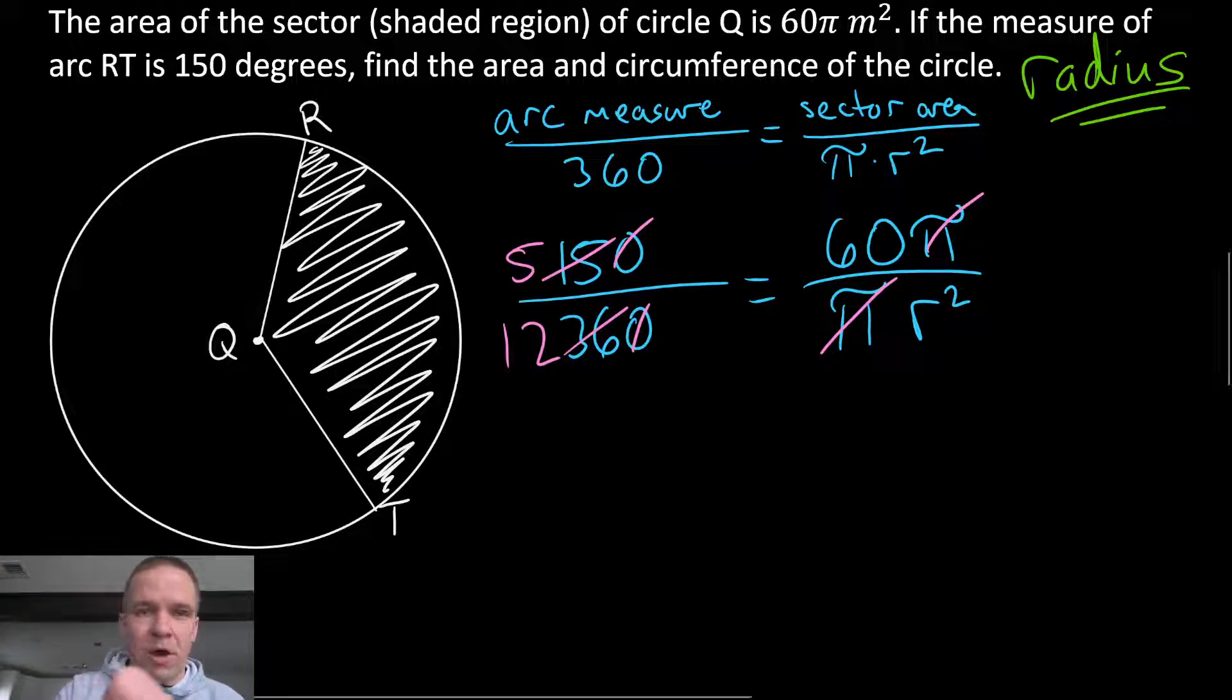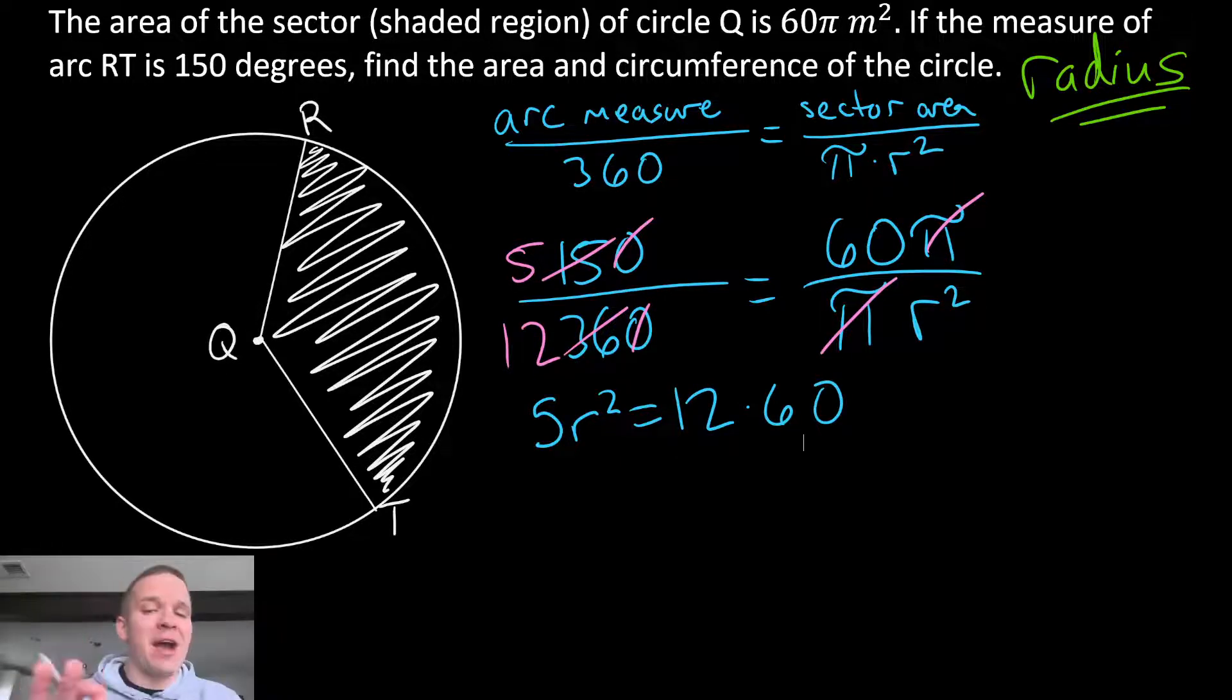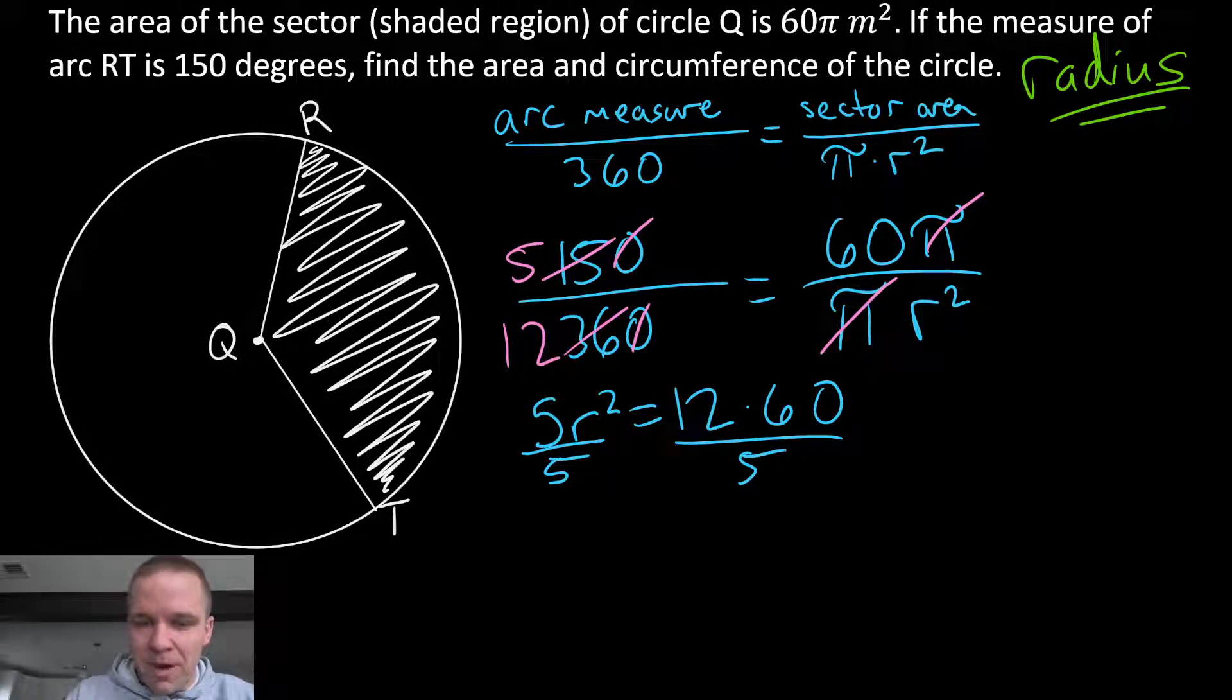So I'm gonna have 5r² when I cross multiply. I'll have 5r² equals, and then it's gonna be 12 times 60. Now I can do 12 times 60 in my calculator. But check this out, are you ready? I'm gonna divide by five while it's still separated. And I'm gonna have r² equals...